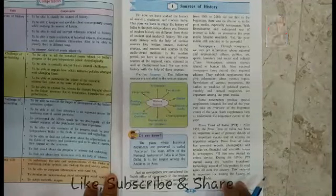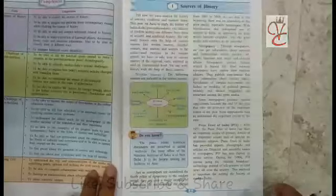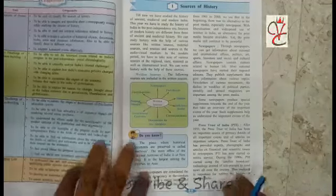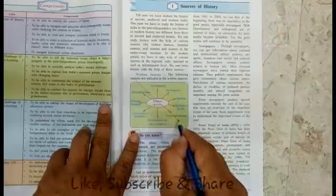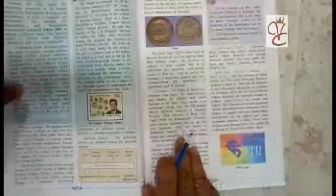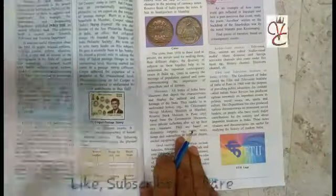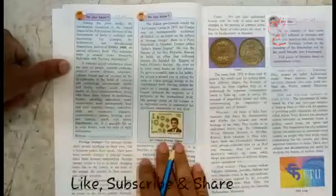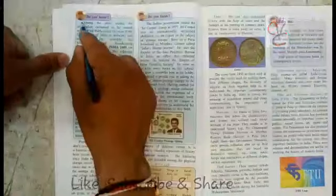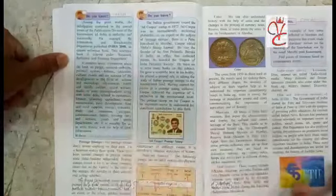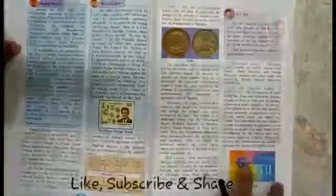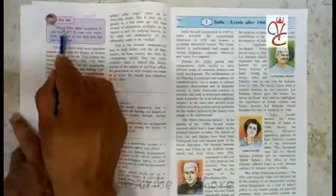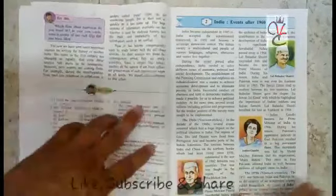Lesson number 1: Sources of History. Chapter 1, 'Written Sources' — this part is reduced. Page number 2, 'Do you know?' — this part is reduced. Page number 3, 'Try this' — it is also cancelled. Page number 4, 'Try this' — also cancelled.